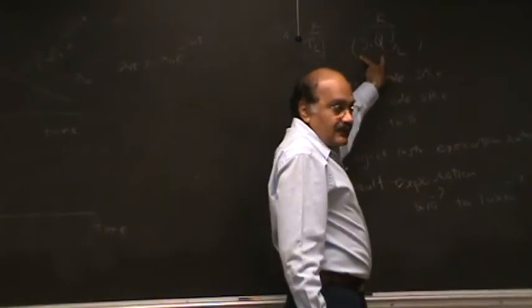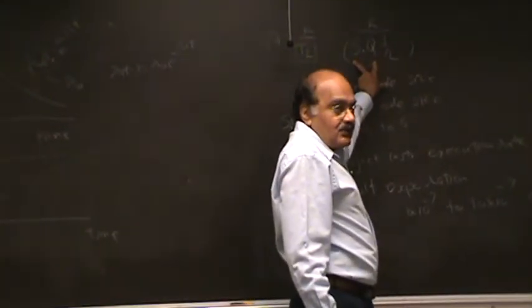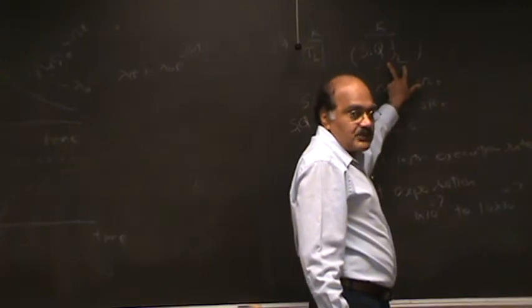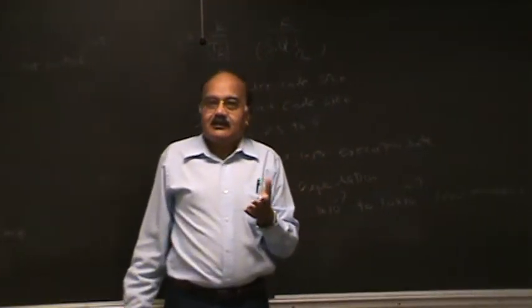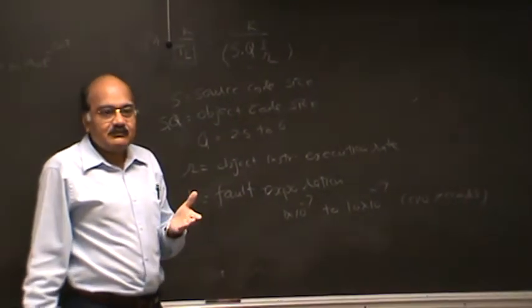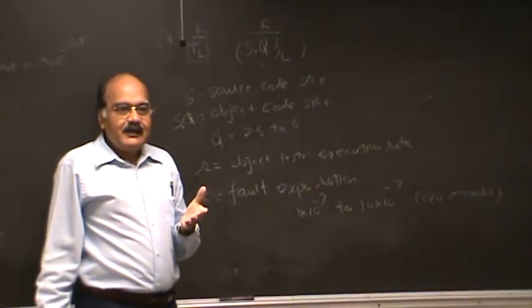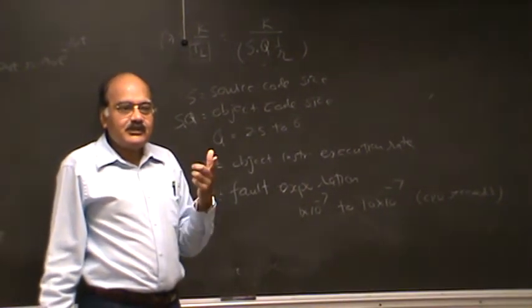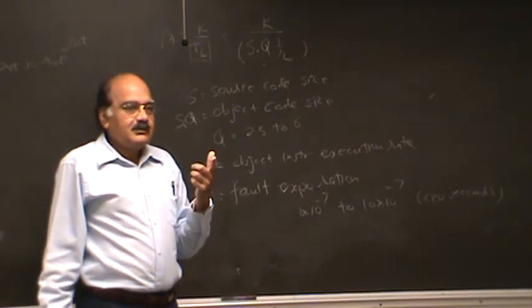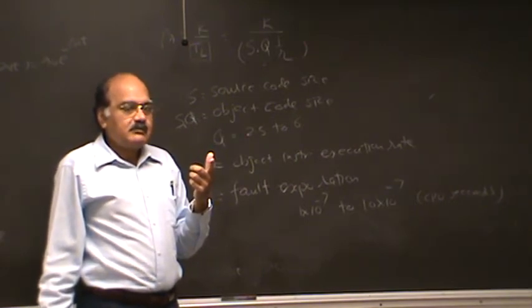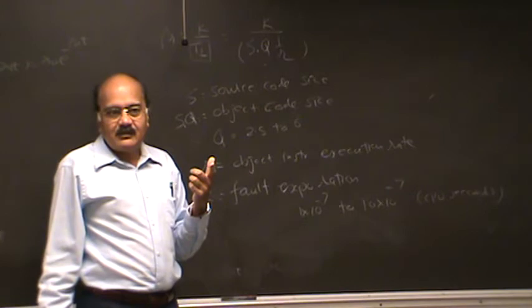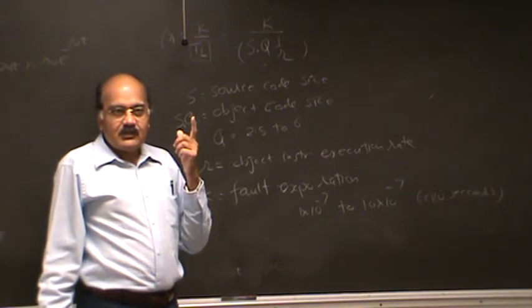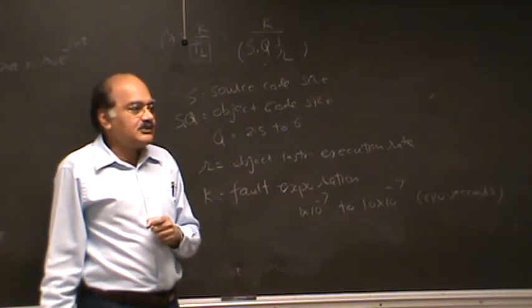Total number of object instructions multiplied by how long it takes for one instruction to execute. If you have a 1 GHz processor, your clock frequency is 1 multiplied by 10 raised to 9 cycles per second. Each clock pulse takes one nanosecond.